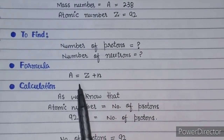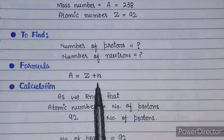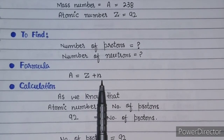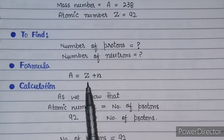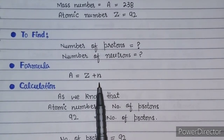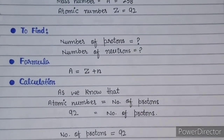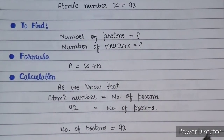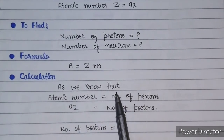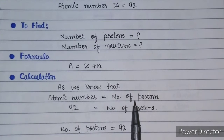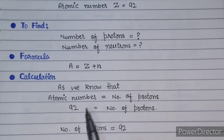In the previous lecture I told you — you have to remember this formula: A is equal to Z plus N. A is the mass number, Z is the atomic number, and N is the number of neutrons. Now, Z equals the number of protons. The atomic number is given as 92.